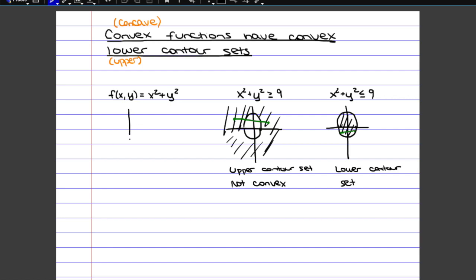And this function here, the two-variable function, would be a three-dimensional graph. It would essentially be like a parabola, which would be convex.